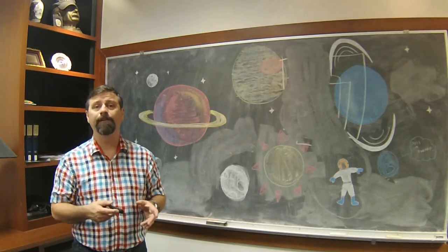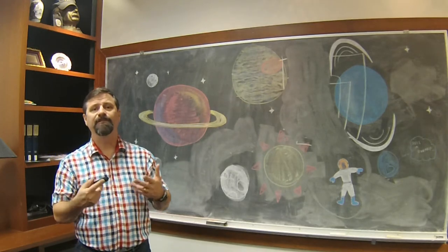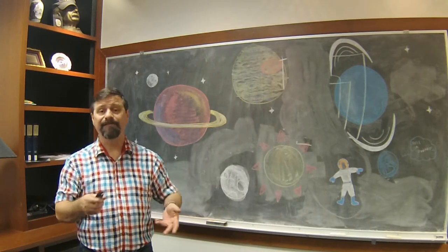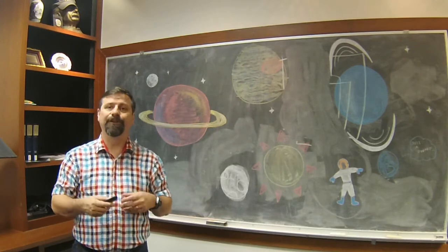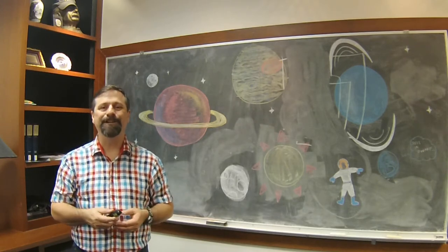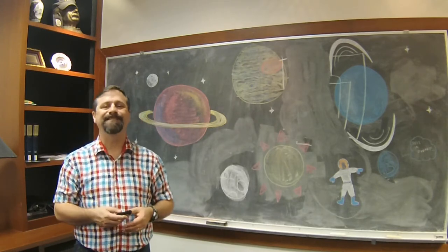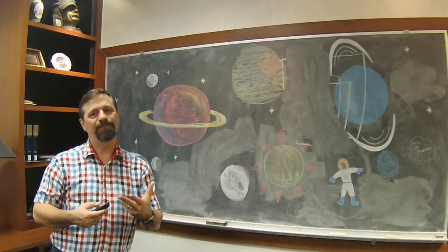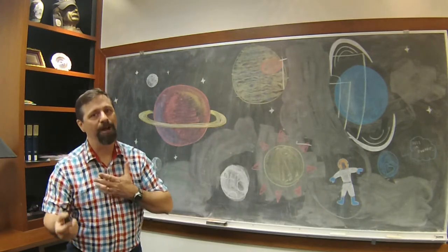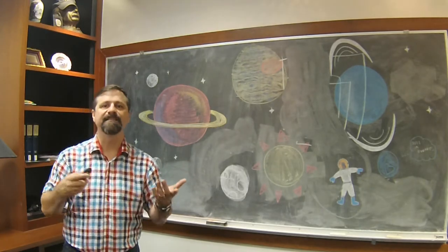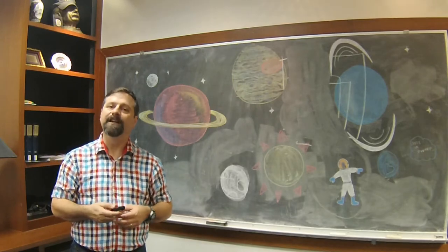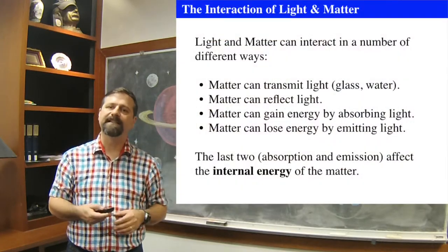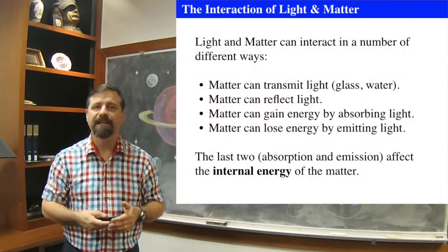Color is an incredibly important thing to astronomy because things have different colors. We need to actually know how we can quantify this concept of color, but first we need to understand a little bit about where color arises and how light interacts with matter. Let's discuss that before we get into the nature of what color is with magnitudes.